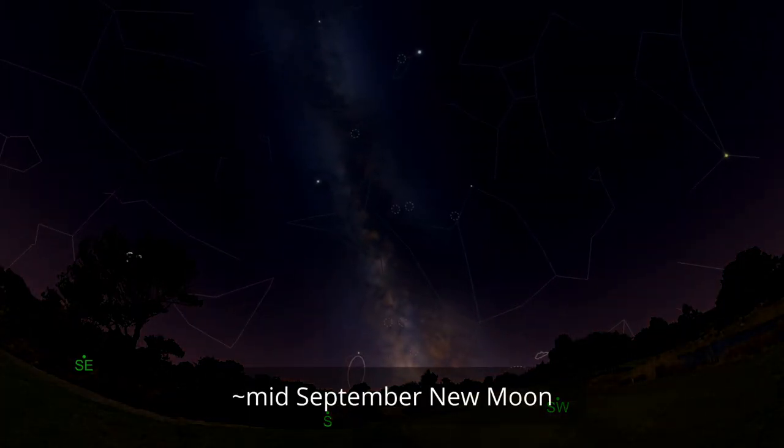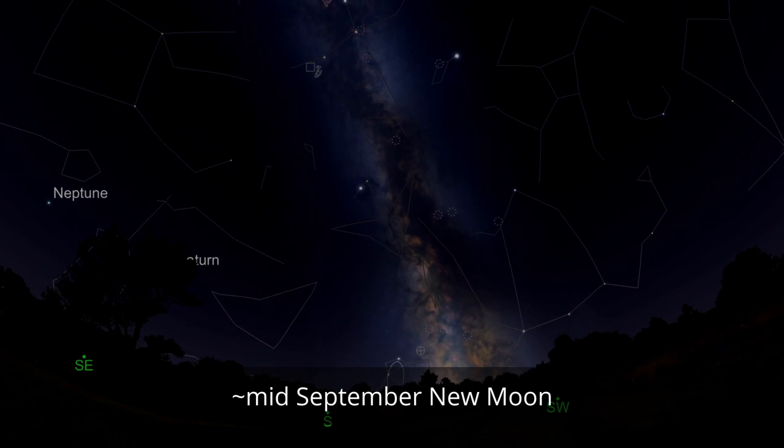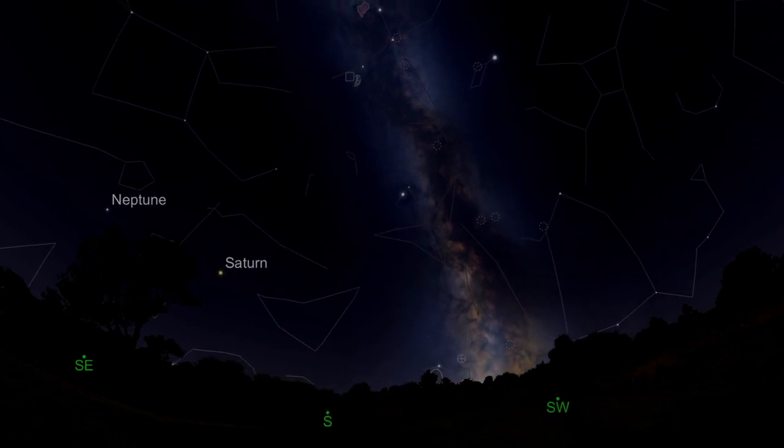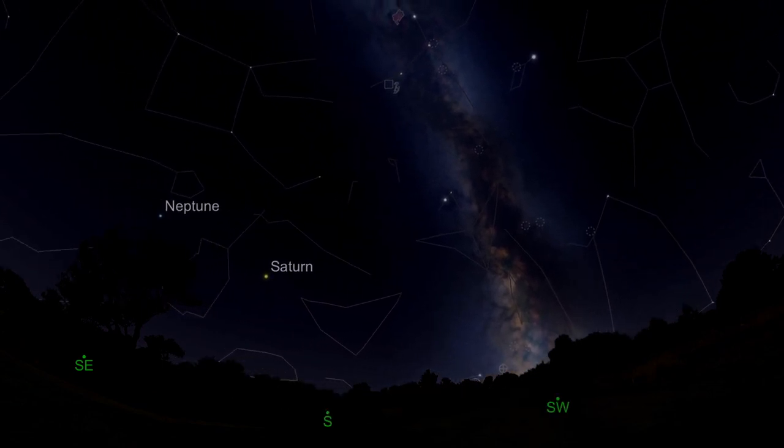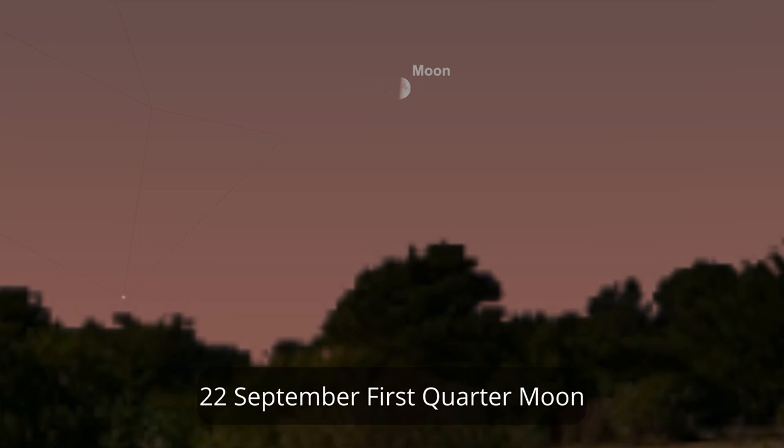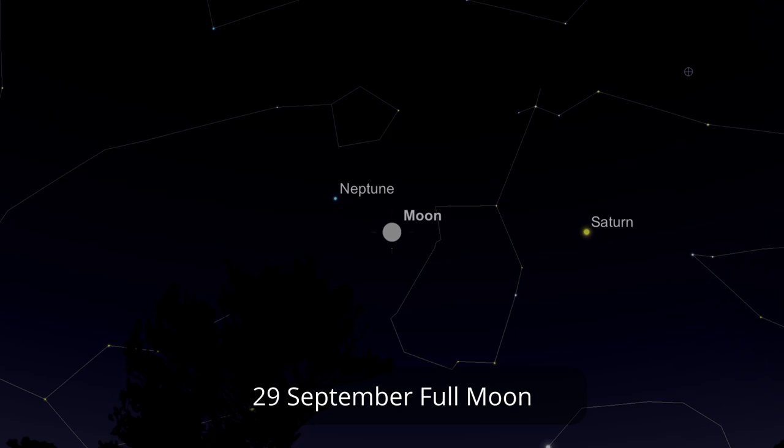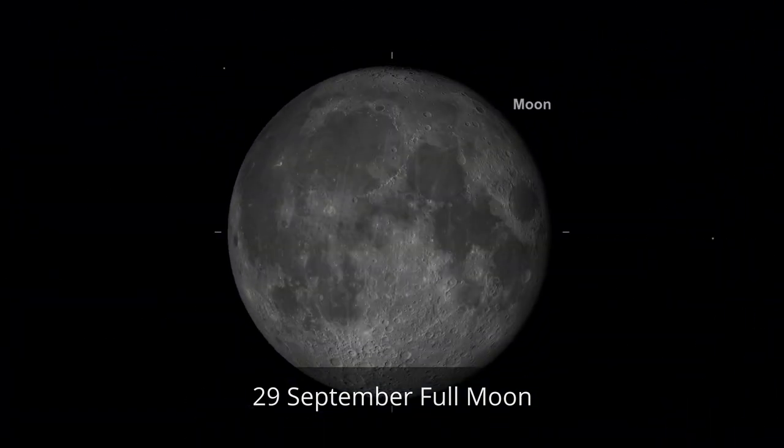15th of September we've got the new moon so that's the time to go out and do your deep sky observing. Photograph the last of the summer Milky Way around the middle of the month. 22nd of September we've got the first quarter moon in the evening sky. 29th of September we've got a full moon and it's another super moon.